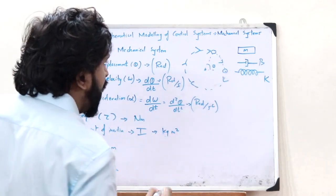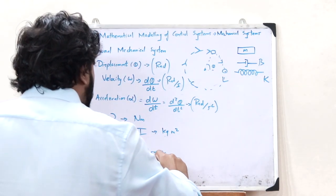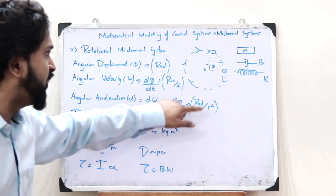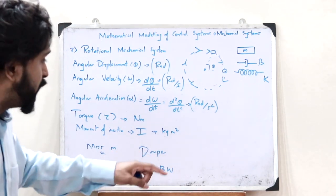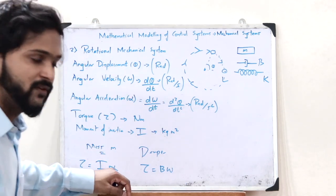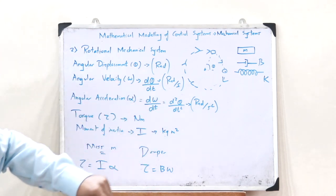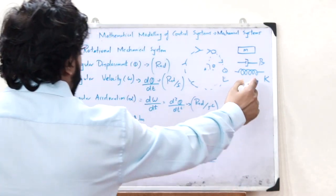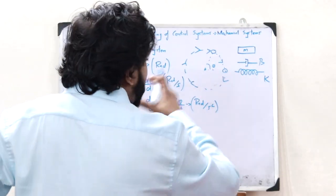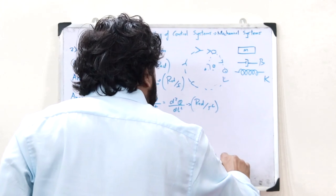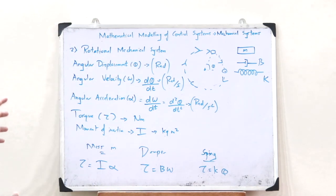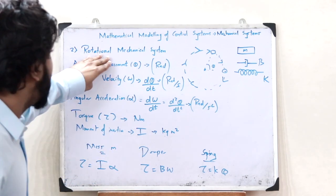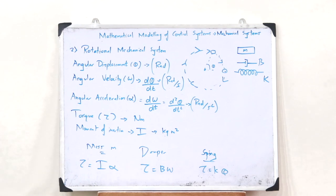For a damper with damping coefficient B, the torque is given as τ = Bω, where ω is the angular velocity — in translational motion it would have been B times V. Finally, for a spring with spring constant K, the torque is τ = Kθ, where θ is the angular displacement. This covers the basic concepts behind a rotational mechanical system, and it is with these that we find the mathematical modeling of rotational mechanical systems.